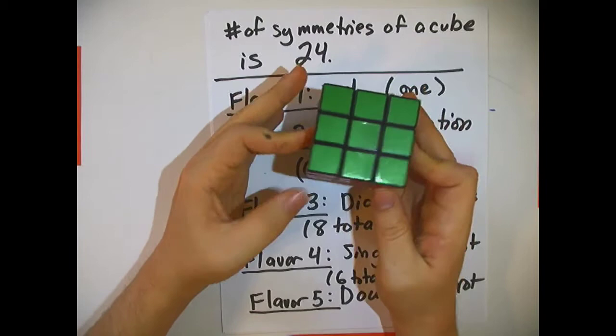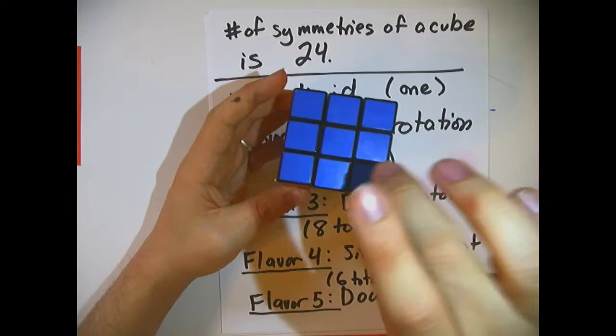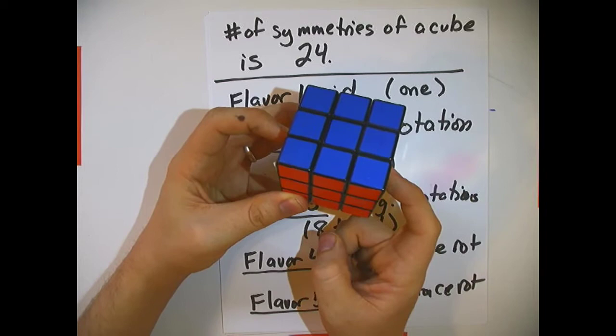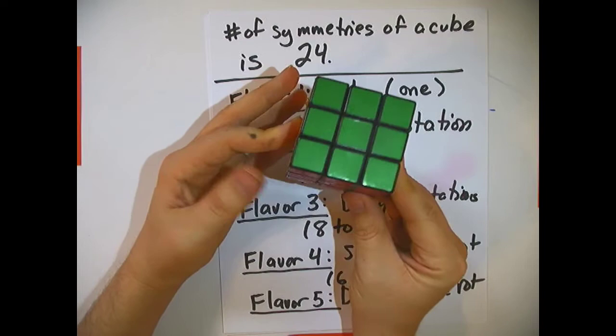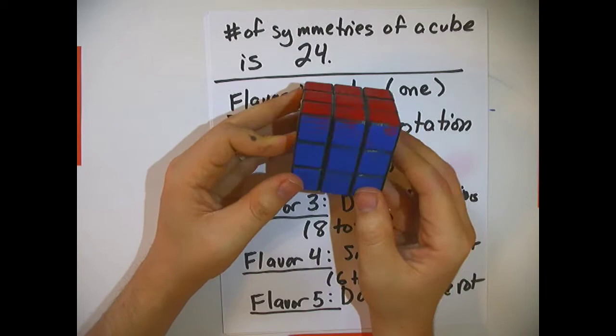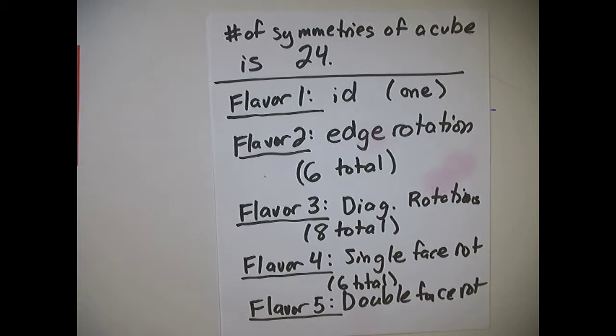Next is the double face rotation — that's a single face rotation done twice. Starting here, I rotate once, then twice. What that does is exchange the top face with the bottom face, and the front face with the back face, while leaving the two side faces where they were. Rotating twice in one direction is the same as rotating twice in the other direction, so there is only one double face rotation per pair of opposite faces — giving three double face rotations total.